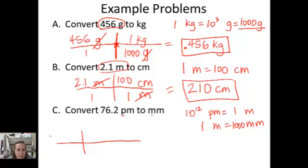Take our given here, 76.2 picometers. And that's how we have to do it. We have to take this unit, PM. We have to put that on the bottom so it's going to cancel. We go look at our conversions. 10 to the 12th goes next to the picometer unit. And one meter goes on the top. Now this cancels out. Picometers cancels out. But I'm not done. Because I wasn't asked how many meters it is. I was asked to convert it to millimeters.